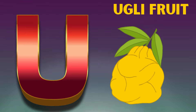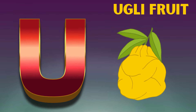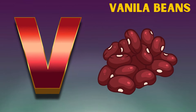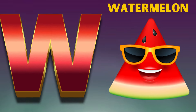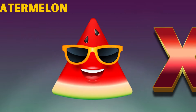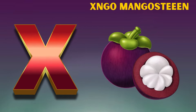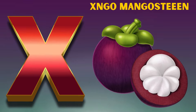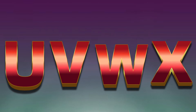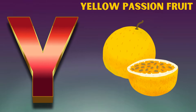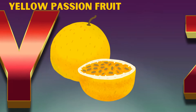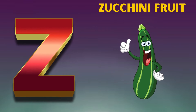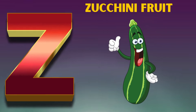U is for ugly fruit, u-ugh ugly fruit. V is for vanilla beans, v-v-v vanilla beans. W is for watermelon, w-w-w watermelon. X is for xango mangosteen, z-z xango mangosteen. Y is for yellow passion fruit, yeah yeah yellow passion fruit. Z is for zucchini fruit, z-z zucchini fruit.